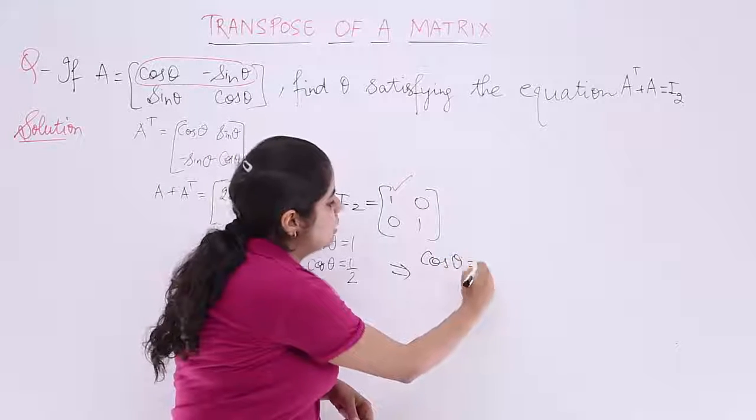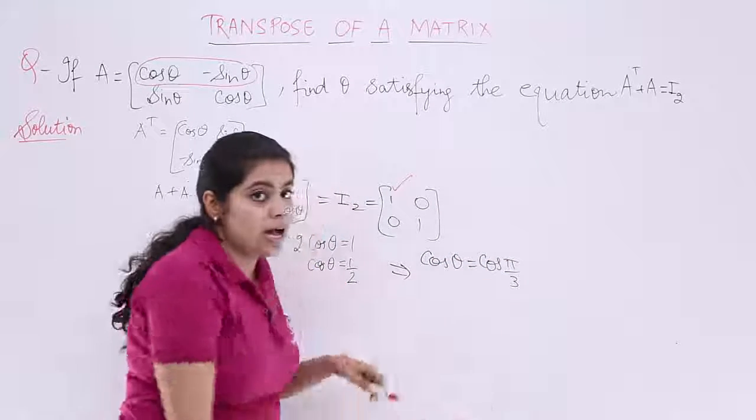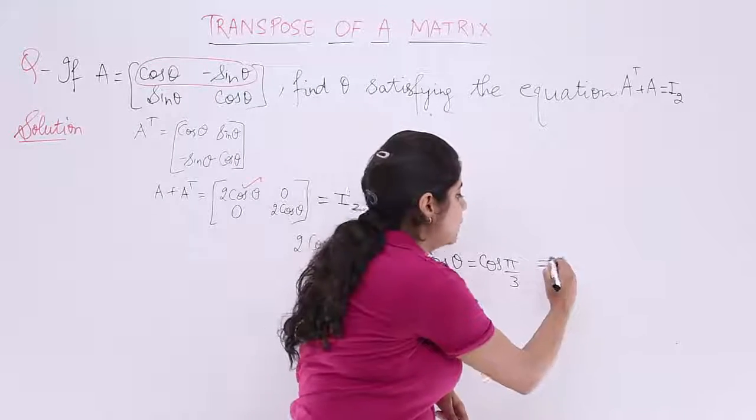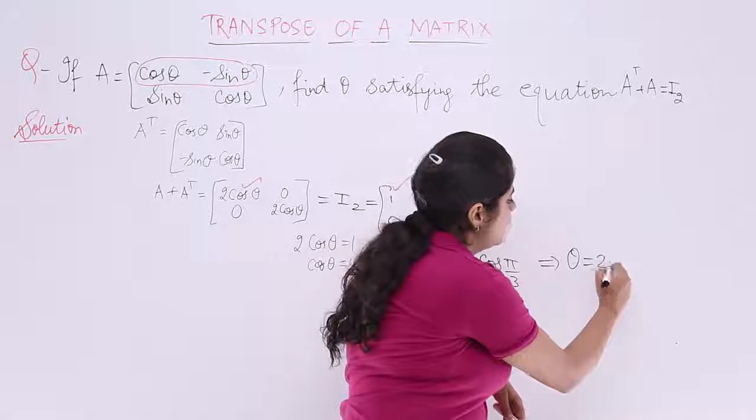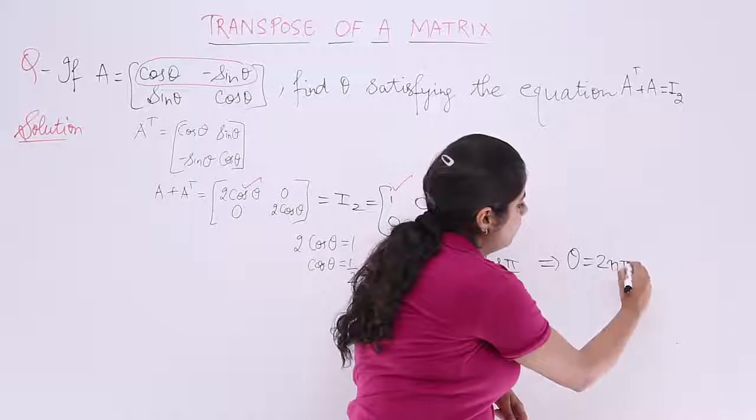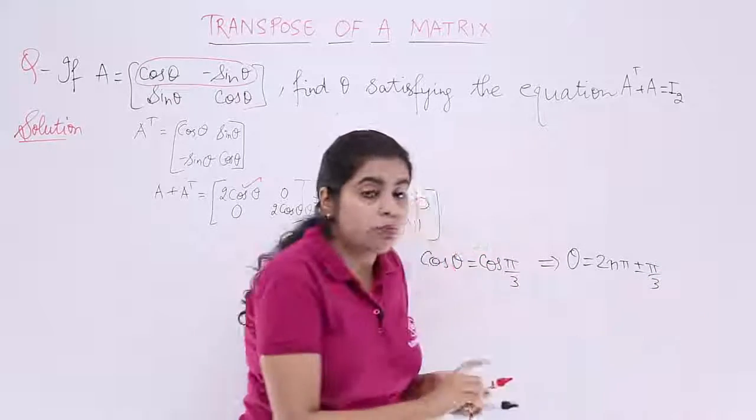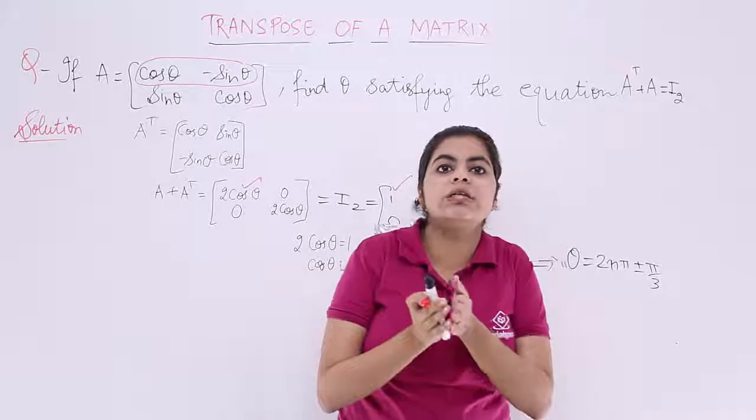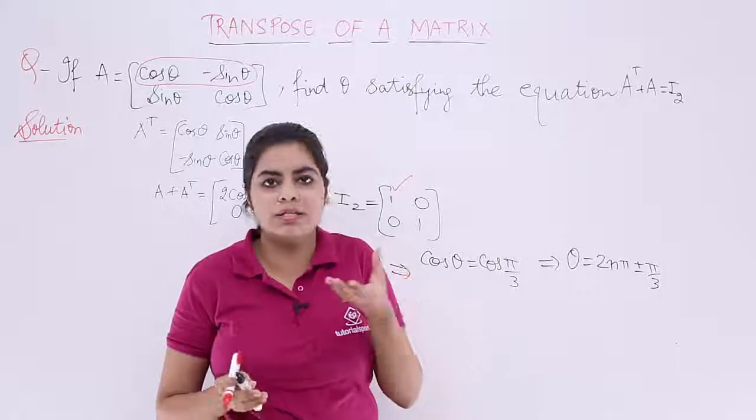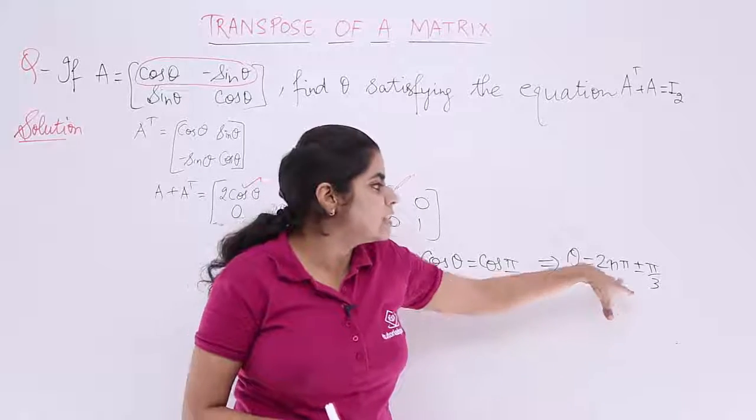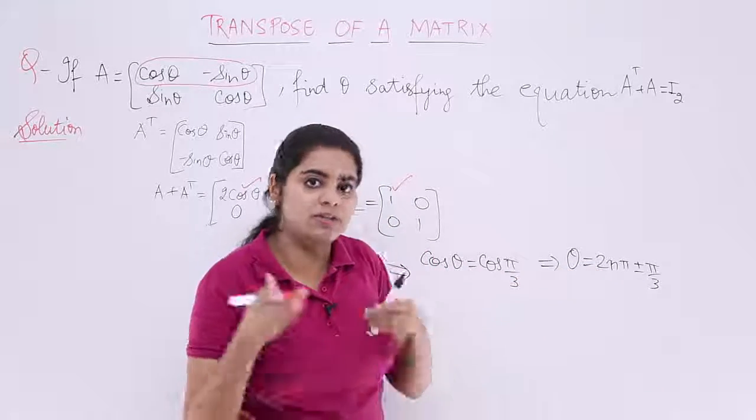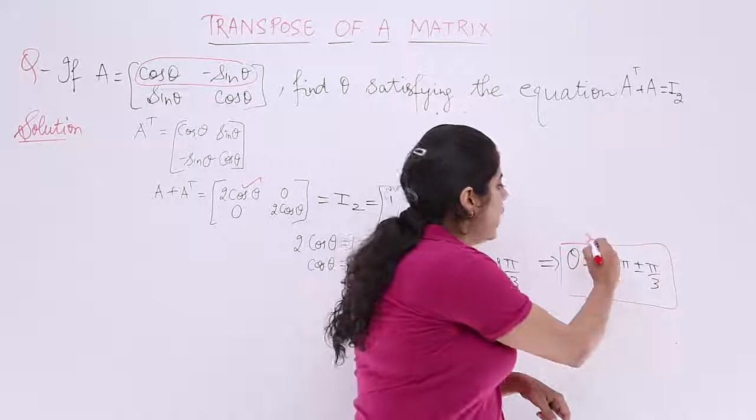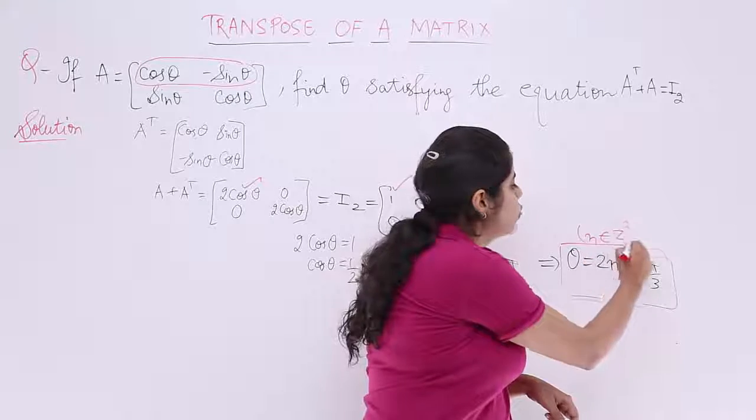If cos theta equals 1 by 2, what is my theta? My theta is basically as per the general solution and the principle we studied in class 11. Cos theta equals cos pi by 3. The general solution is theta equals 2n pi plus minus pi by 3. I have applied the formula where cos theta 1 equals cos theta 2, then theta equals 2n pi plus minus pi by 3. This is the general solution where n belongs to integers.